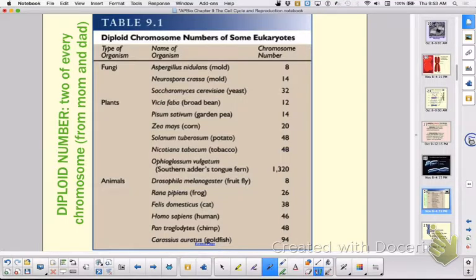The diploid number, 2n, is when you have two full sets of chromosomes - one set from each parent - as found in somatic cells. Somatic cells are body cells. A haploid number is when you have only one set of chromosomes - a mixture of parental chromosomes - as in sperm or egg. These are called gametes.